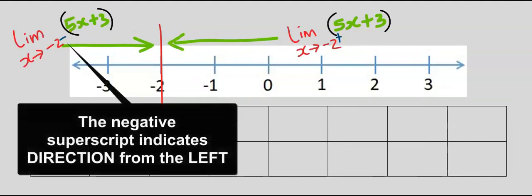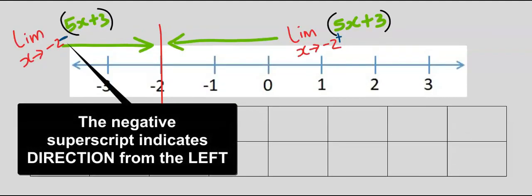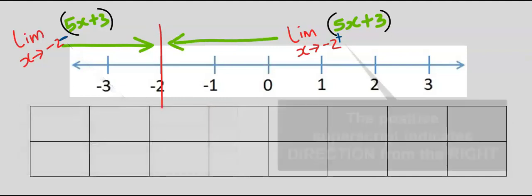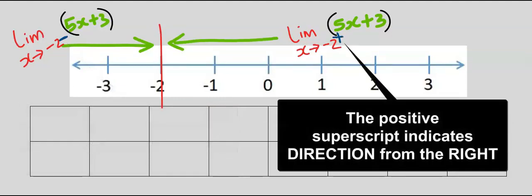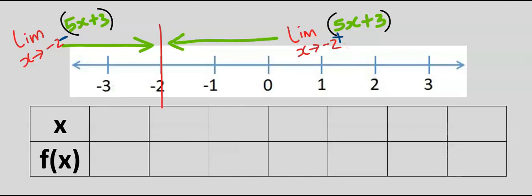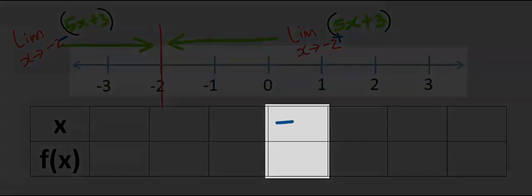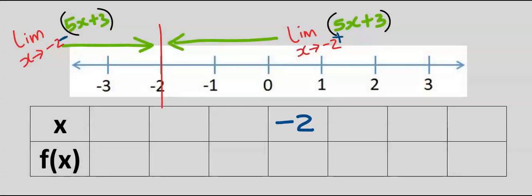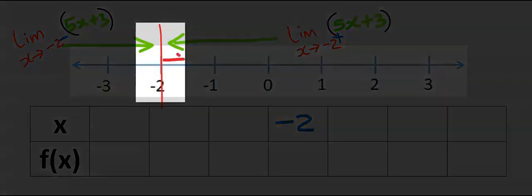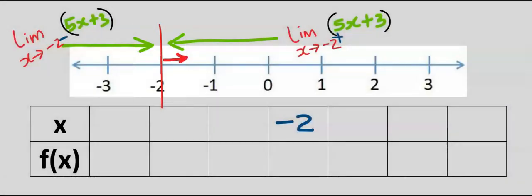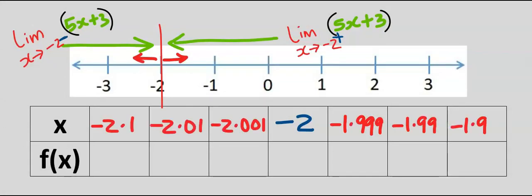Next, we fill out the table. Remember, this negative means the approach from the left, and this positive means the approach from the right. Next, we locate the middle of the table and we are going to consider the minus two. Next, we are going to consider some values a bit minus two towards the right and a bit minus two towards the left.